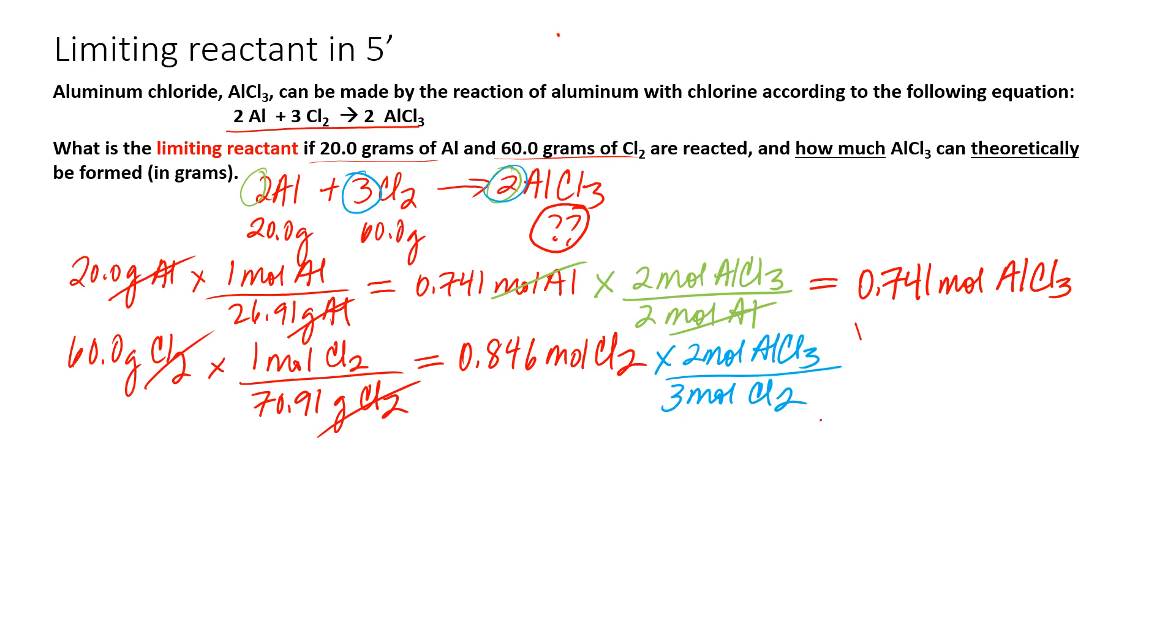So essentially what we're doing here is we're multiplying our moles of Cl2 by two thirds. Again, moles of Cl2 are going to cancel and we're going to get the amount of product that could be formed in this case. So this is in fact 0.564 mole of AlCl3.